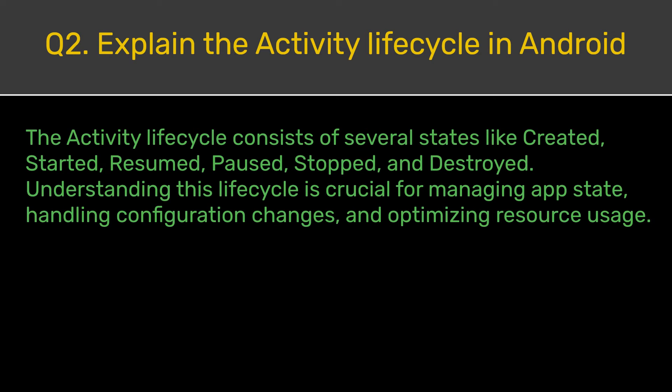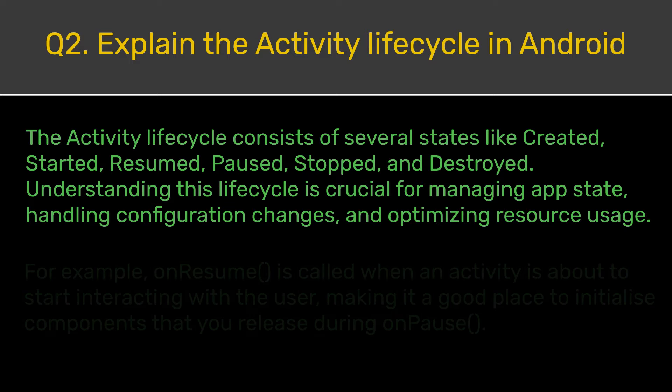The activity lifecycle consists of several states like created, started, resumed, paused, stopped, and destroyed. Understanding this lifecycle is crucial for managing app state, handling configuration changes, and optimizing resource usage.